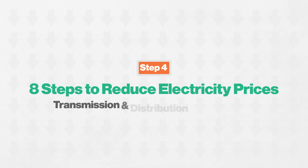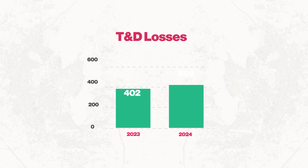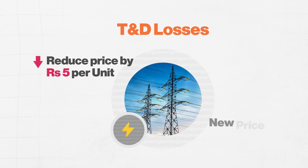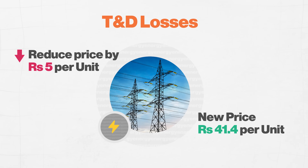The fourth opportunity is transmission and distribution losses. In the last video, we discussed that these losses are approximately Rs.5 per unit. The system's failure must be addressed. How can the government pass on the benefits? This is a fiscal decision of the federal government, and it is the provincial government's administrative responsibility. This loss should be charged to the provinces through the NFC, and they should be forced to reduce their costs. With this, the bill can be reduced by Rs.5 per unit. The new price is Rs.41.40 per unit.